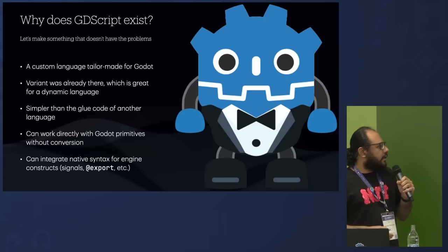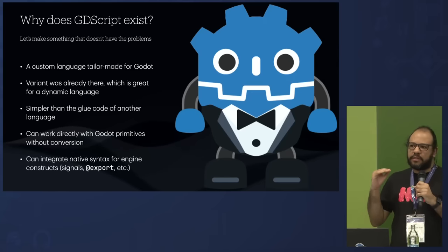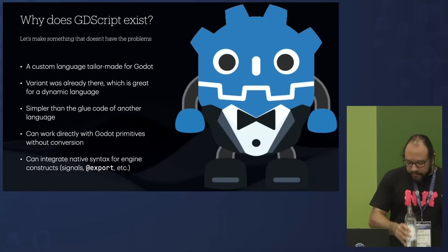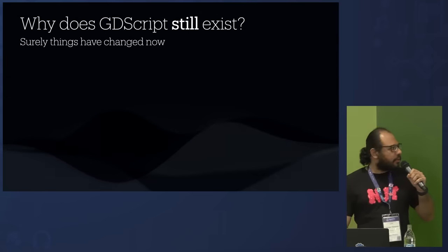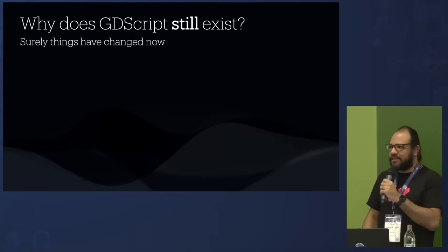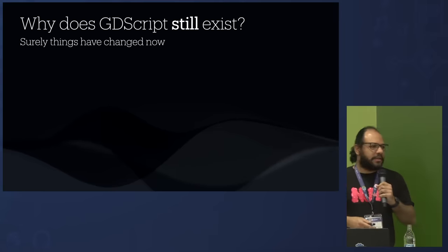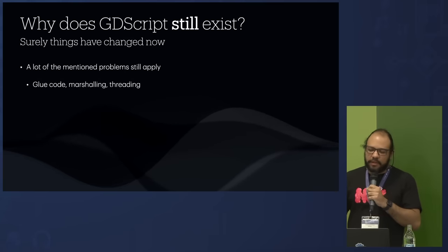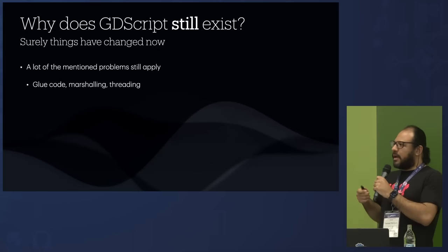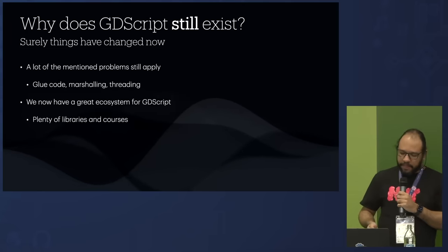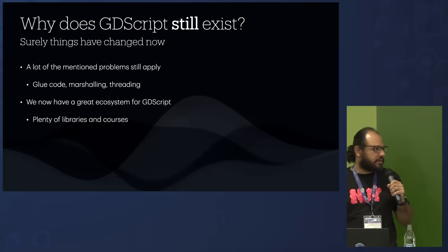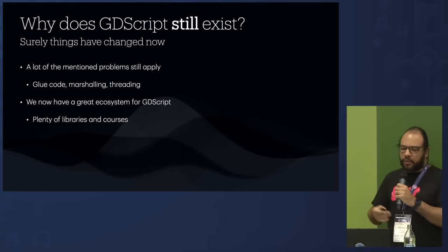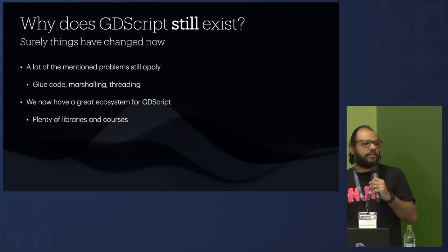You can also integrate syntax directly. You have signals and can put them straight into the language, along with exports and so on. But why does GDScript still exist? These same problems — conversion code marshaling, glue code, threading — are still problems in a lot of languages. And now we have a great ecosystem in GDScript with a lot of material and tutorials. Just throwing everything away for another language and starting from scratch doesn't make a lot of sense.